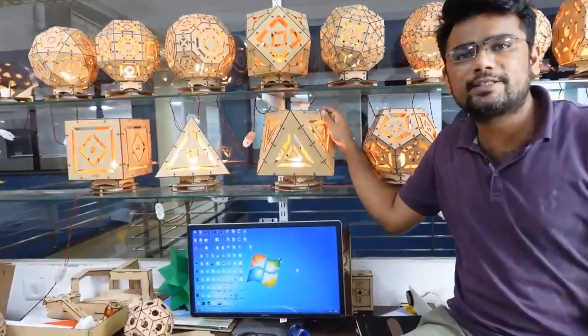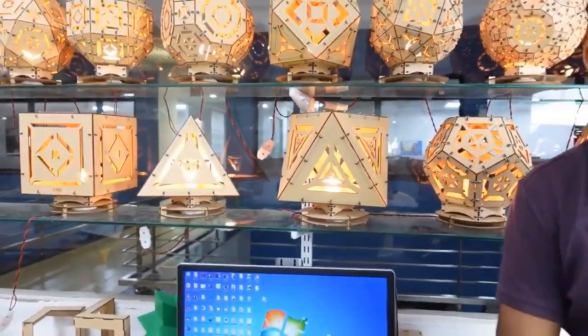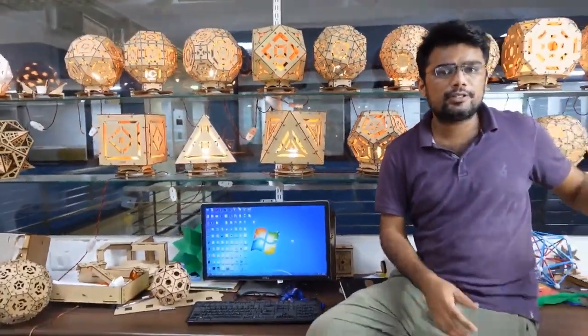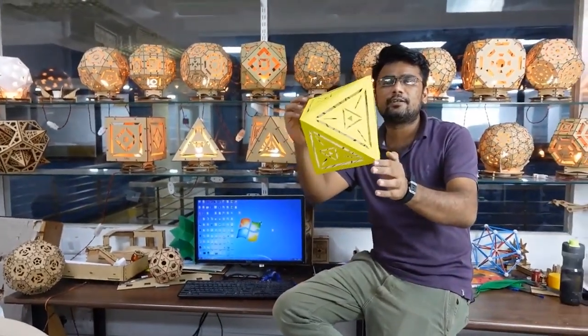On the second day of the series, today we are going to make this octahedral lamp. It will look something like this when we try to make it with paper.